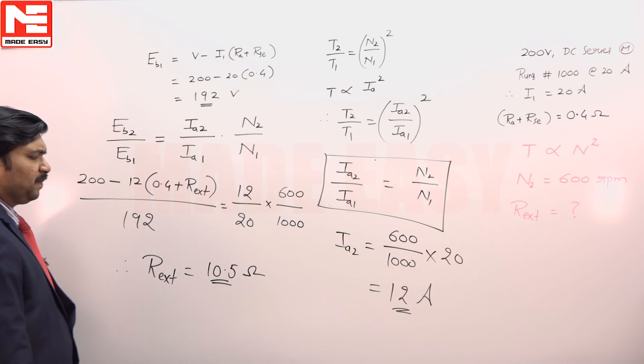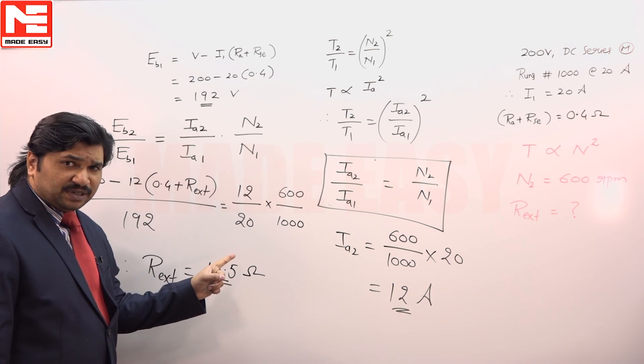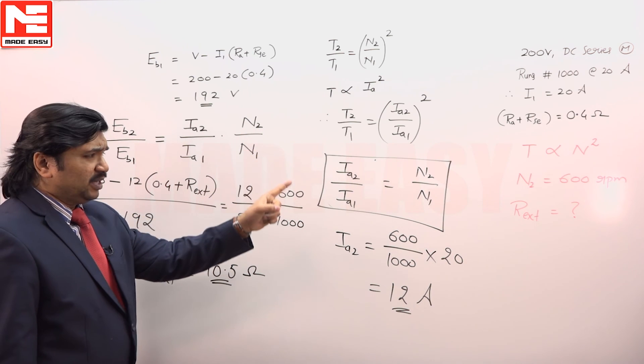So finally, if you add 10.5 ohms in series with the armature then the motor speed reduces from 1000 to 600 rpm.